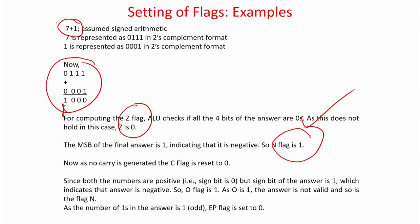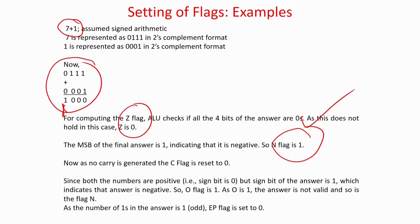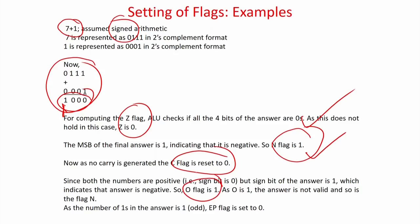Another example: 7 + 1 = 8. In this case, I assume two's complement (signed) arithmetic using two positive numbers, just to illustrate the difference. Adding 0111 and 0001 gives 1000. The zero flag is reset. MSB is 1, so the negative flag is set to 1. There is no carry generated, so the carry flag is 0. Since both numbers are positive (sign bits are 0) but the answer has sign bit 1, the overflow flag is set to 1 — this means the answer is not valid because positive 8 cannot be represented in 4-bit two's complement arithmetic (range is minus 8 to plus 7).